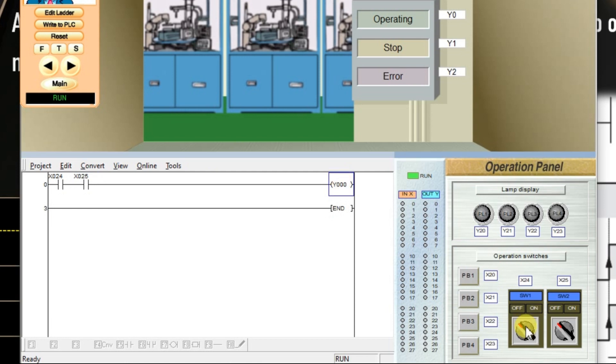Again I am making this input off. Second input is on. So first input is 0, second input is 1. Output is 0. Again if my both inputs are already off, output is also off.